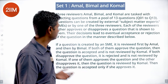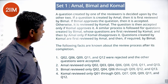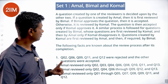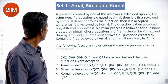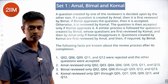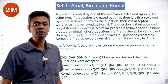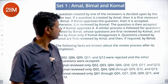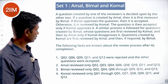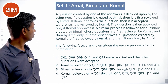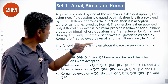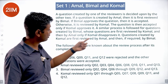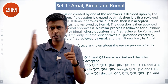A question created by one of the reviewers is decided upon by the other two. If created by Amal, it is first reviewed by Bimal; if Bimal approves, it is accepted; otherwise it goes to Komal and is accepted only if Komal approves. A similar process is followed for questions created by Bimal — first reviewed by Komal, then by Amal only if Komal disapproves. Questions created by Komal are first reviewed by Amal and then, if required, by Bimal.